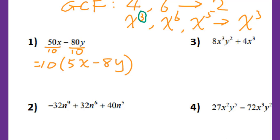For the second problem, this is standard form. But the first leading coefficient is negative, so first step is I will take negative outside. When you take negative outside, don't forget change the sign. So I will get this, 32n to the ninth power minus 32n to the sixth, then minus 40n to the fifth.